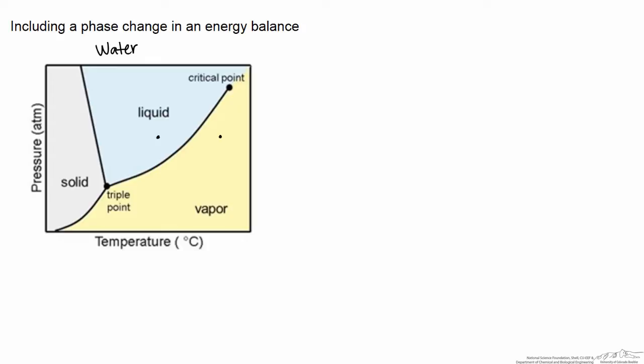The first thing we do is raise the temperature from 50 degrees until we hit the boiling point, or 100 degrees C. Then as we change the phase from liquid to vapor, we put in heat, but the temperature and pressure stay the same, because all the heat is going into changing the phase. When the water is all vapor, the temperature rises again as heat continues to be put in until we reach 150 degrees C. So let's see how we can calculate that.